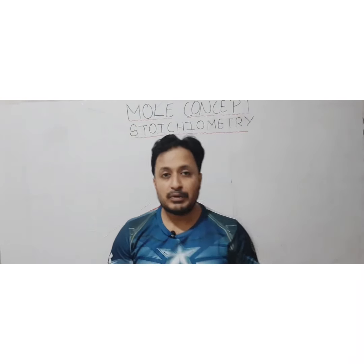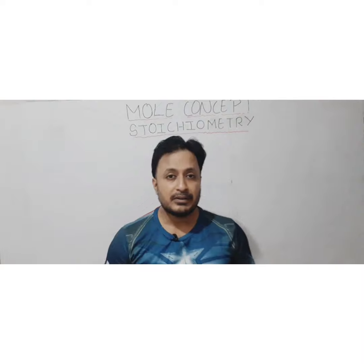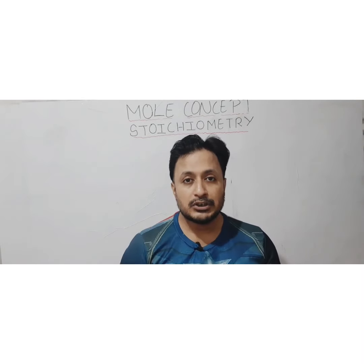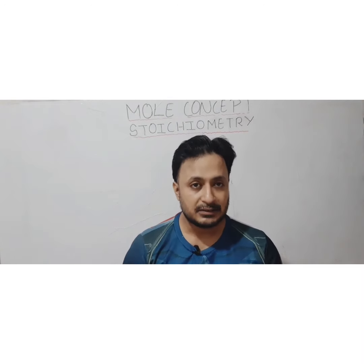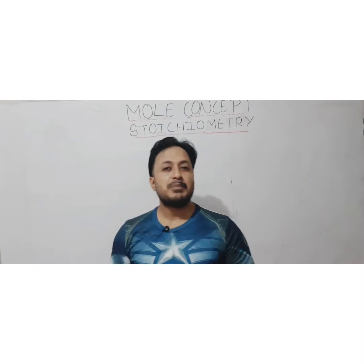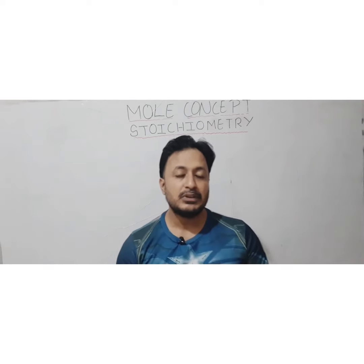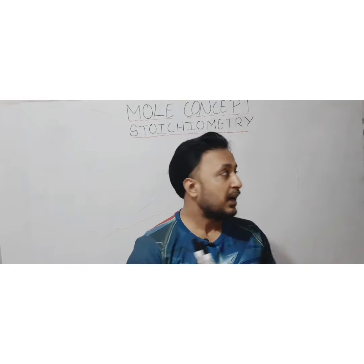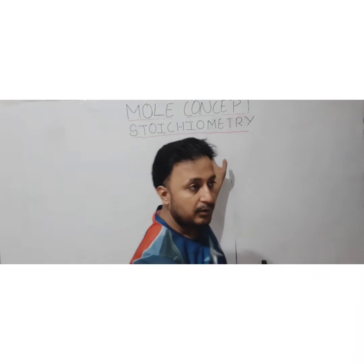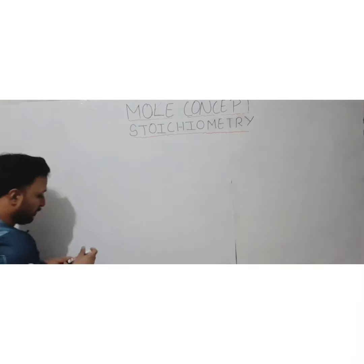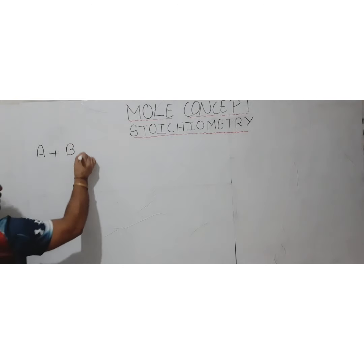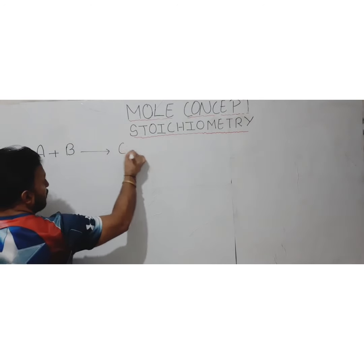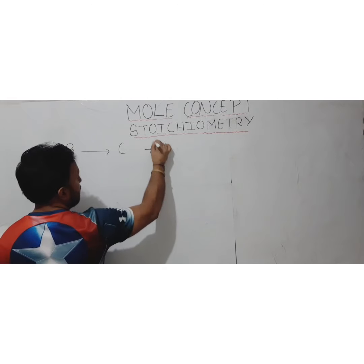When we write any chemical equation, the amount of reactants and products is balanced. When they are balanced, there is a fixed relationship between their quantities — that is what we discuss in stoichiometry. To explain this, consider a general equation: A + B giving two products C and D.